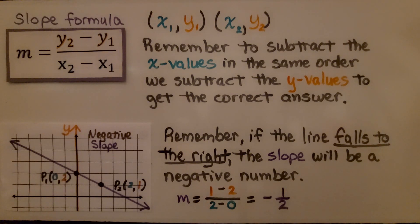Also, remember if the line falls to the right, the slope will be a negative number. We've got for point 1 a 0 and 2, and for point 2 we have a 2 and a 1. So we're going to do 1 minus 2 over 2 minus 0, and it's falling to the right. 1 minus 2 is negative 1, and 2 minus 0 is 2, we have negative 1 half. We have a negative slope.